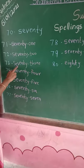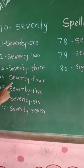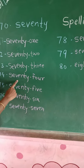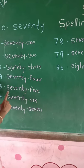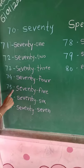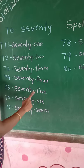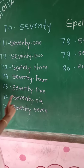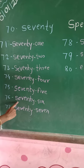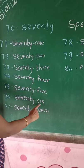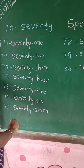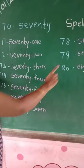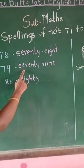Same as 73, I will write the spelling of number 74. Then 75: S-E-V-E-N-T-Y-F-I-V-E, 75. Then 76: S-E-V-E-N-T-Y-S-I-X, 76. Then 77, 78, 79.